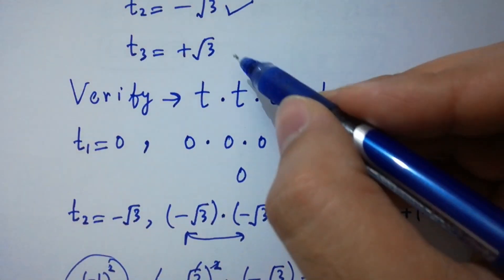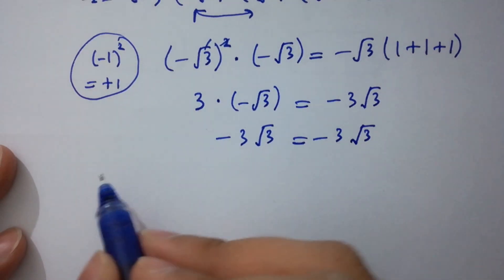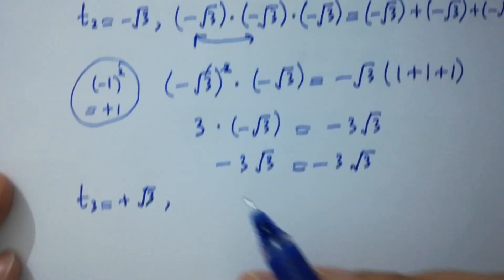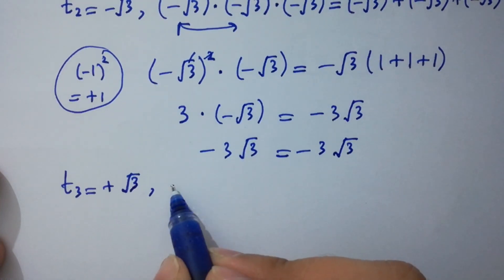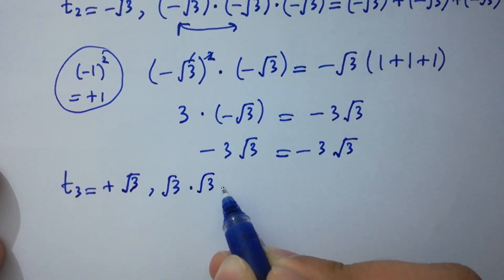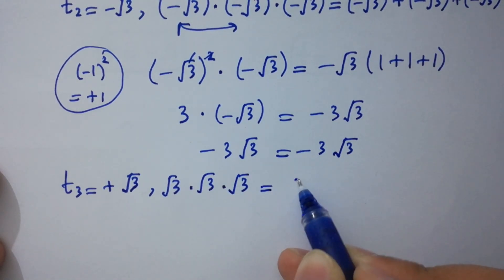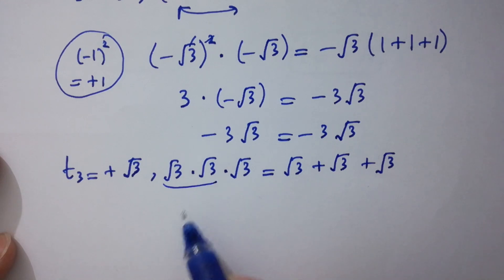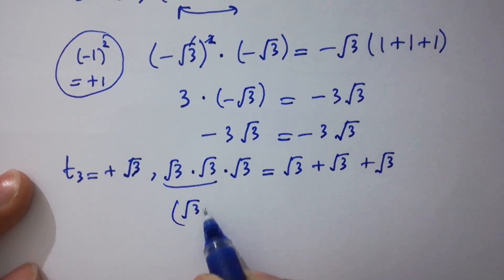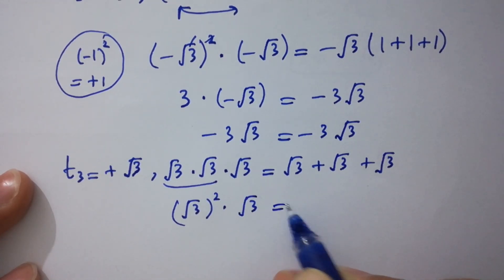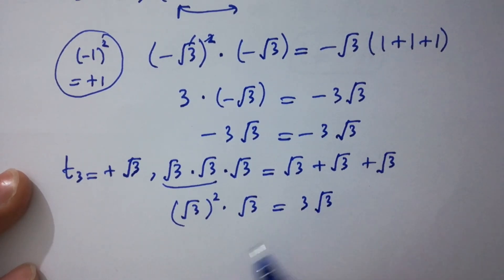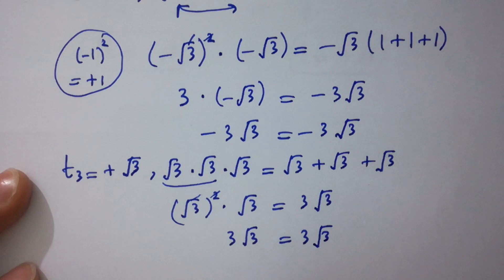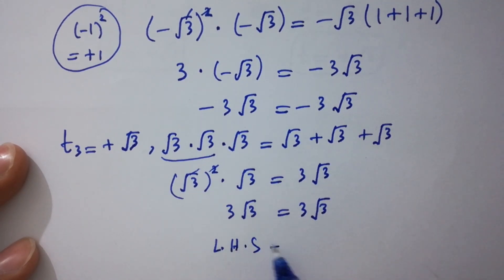Now take t3 equal to plus square root of 3. Substituting into t times t times t: square root of 3 times square root of 3 times square root of 3. On the left side, square root of 3 squared equals 3, times square root of 3 gives 3 square root of 3. On the right side, square root of 3 plus square root of 3 plus square root of 3 equals 3 square root of 3. Left-hand side equals right-hand side.